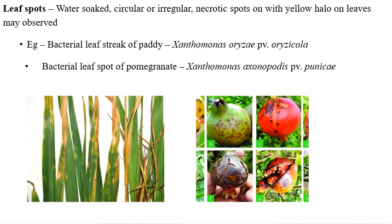Plant pathogenic bacteria will produce various types of symptoms. I won't mention all of them as that would be confusing, so here are the important symptoms to discuss. The first one is leaf spots.